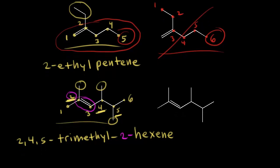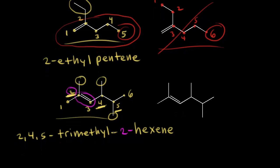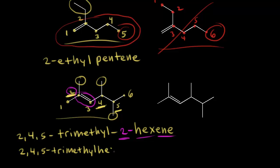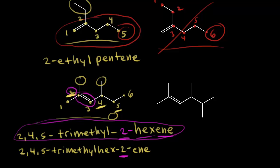There's another way to name this molecule. Instead of putting the two in front of hexene, you can insert the two between 'hex' and 'ene': 2,4,5-trimethylhex-2-ene. The two indicates the double bond starts at carbon two. The first format — 2,4,5-trimethyl-2-hexene — is more of the old-school way of naming this alkene, while 2,4,5-trimethylhex-2-ene is the newer IUPAC style. Currently, most people accept both ways.